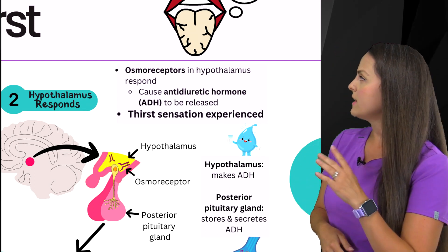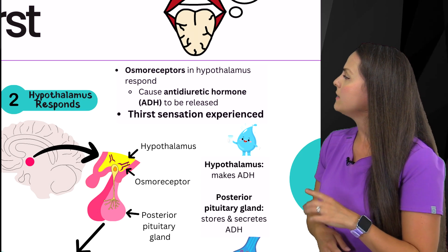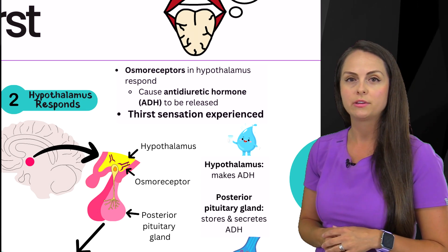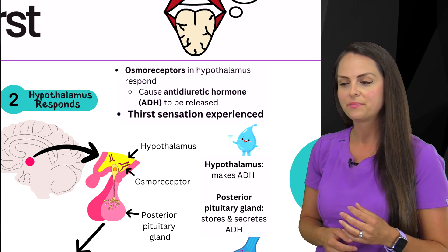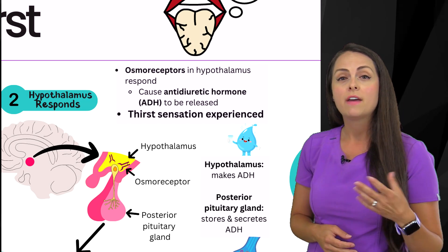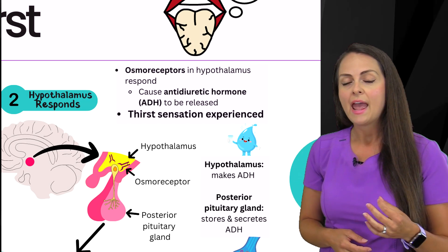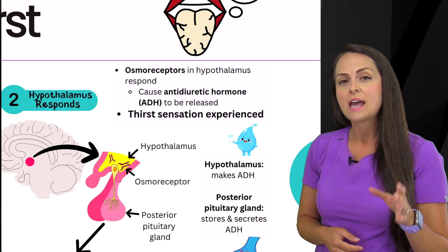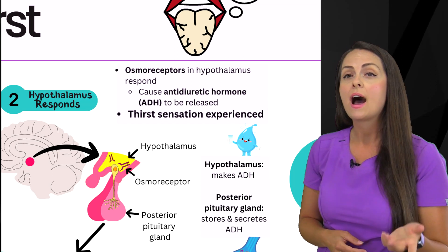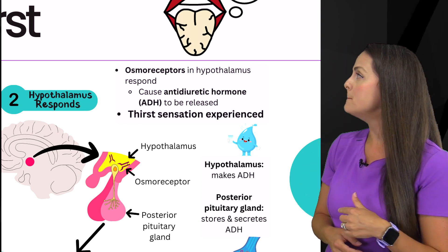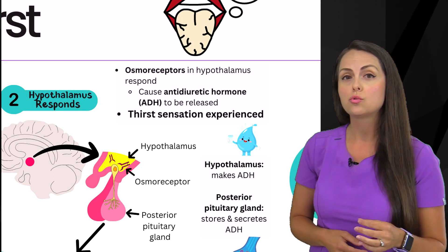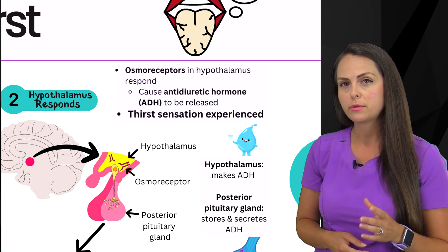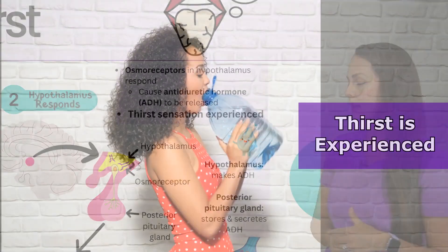Whenever the osmoreceptors respond, they cause antidiuretic hormone — ADH — to be released. ADH is also called vasopressin. ADH is actually made in the hypothalamus, but it is stored and secreted in the posterior pituitary gland.